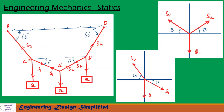Now let us see at point C. At point C, the free body diagram is drawn here. Weight Q is acting downwards, S1 is acting towards this direction, and the angle between the horizontal and S1 is beta. Similarly, S3 is acting towards this direction, and the angle between the horizontal and S3 is 60 degrees.